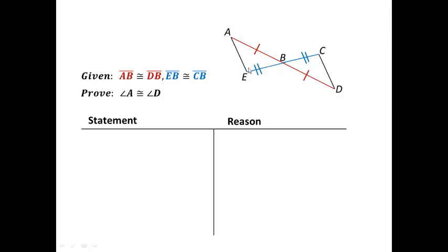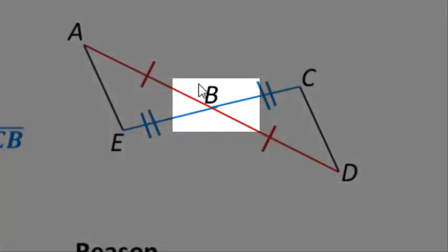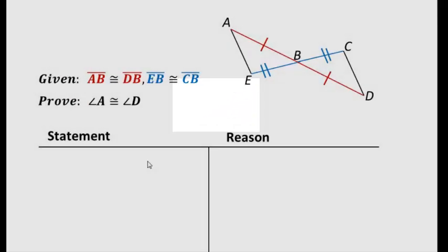I've marked the diagram with our given information. And take a close look, what do you think we can add to prove that these two triangles are congruent? Well hopefully it's jumping out at you. We have vertical angles here, so we're going to add that to our proof.